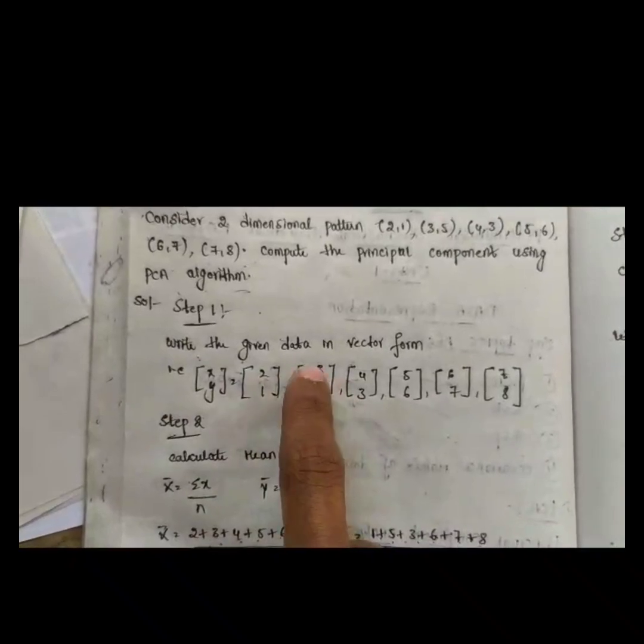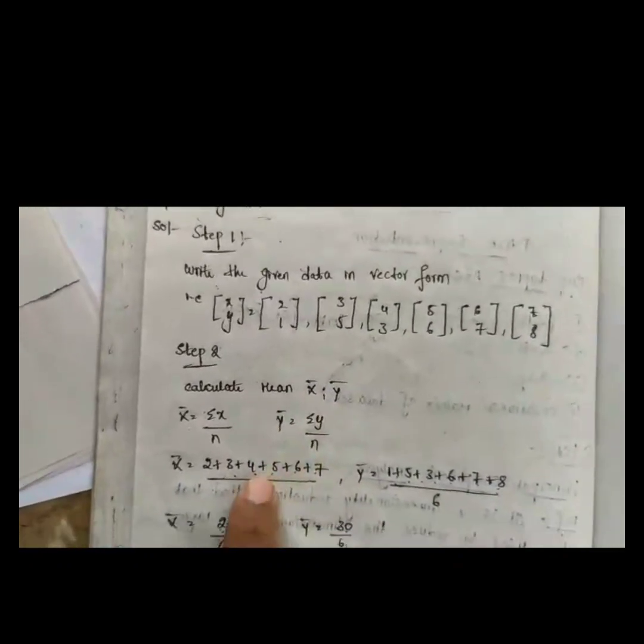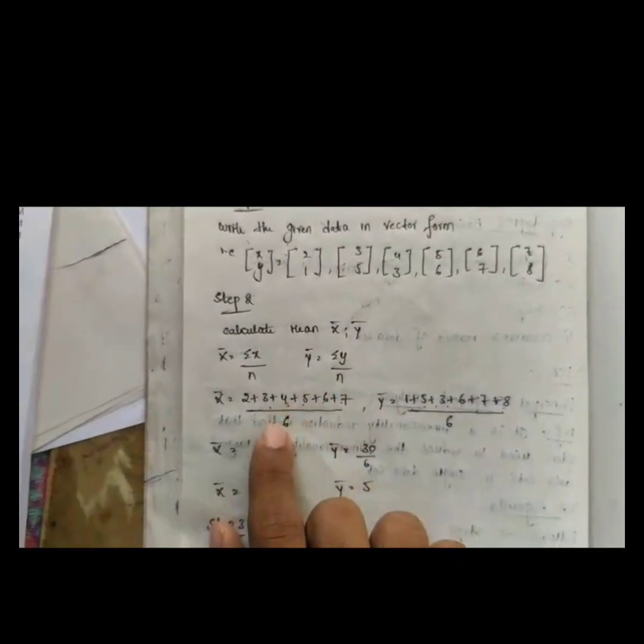The second step is calculating the mean x-bar and y-bar. The x values are 2, 3, 4, 5, 6, 7 and the y values are 1, 5, 3, 6, 7, 8. Using the x-bar and y-bar formulas, we calculate x-bar equals 4.5.